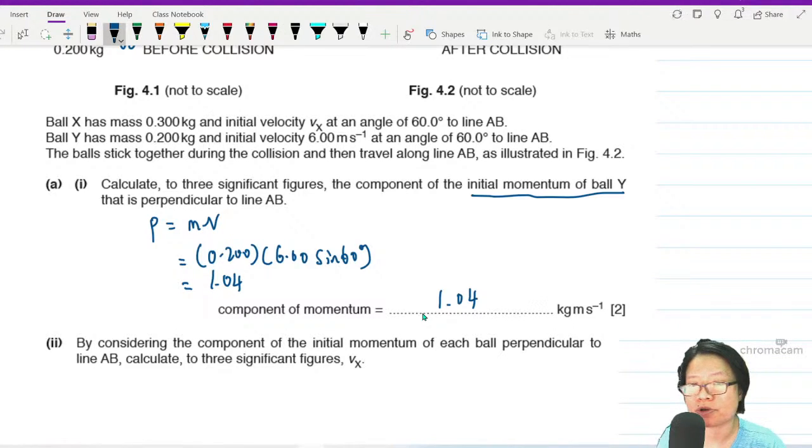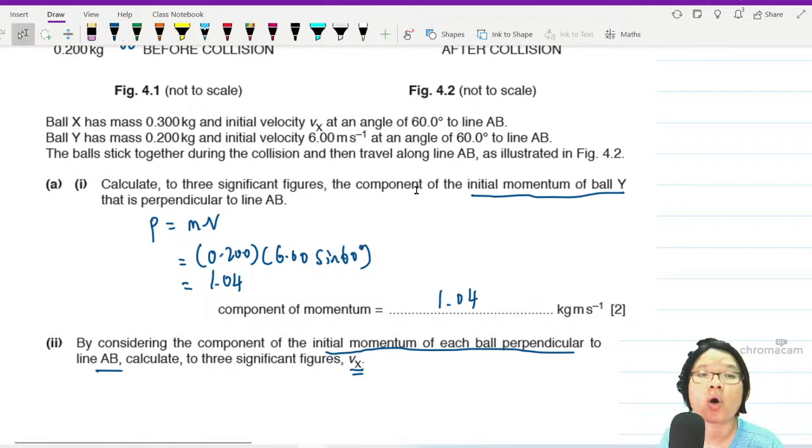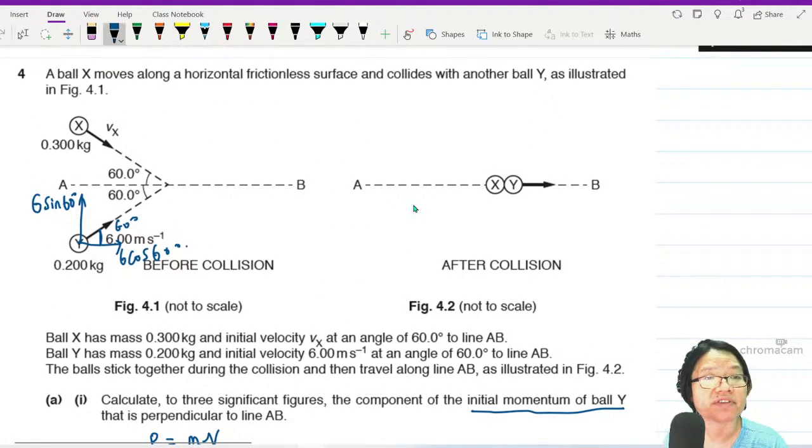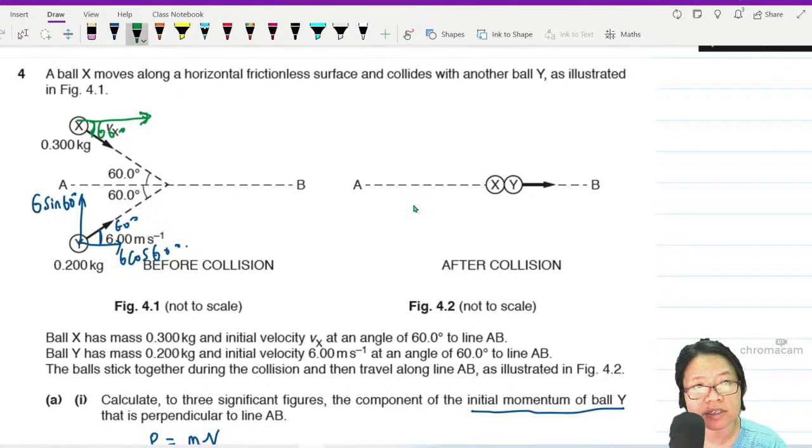By considering the component of initial momentum of each ball perpendicular to AB, calculate Vx. Let's look at Vx. I'm going to split Vx into 2 again. Again, operating on the alternate angle of parallel lines, this is 60 degrees.